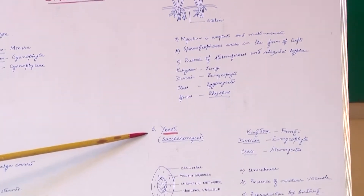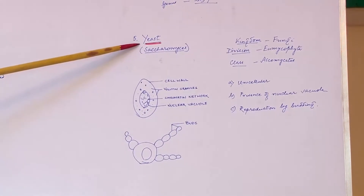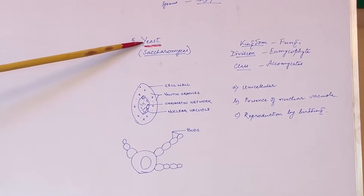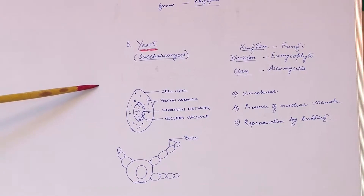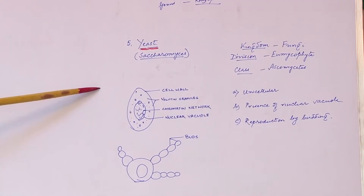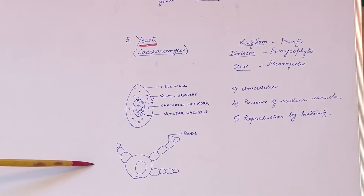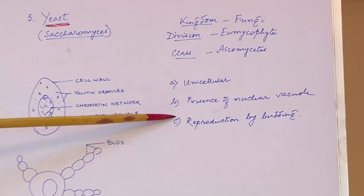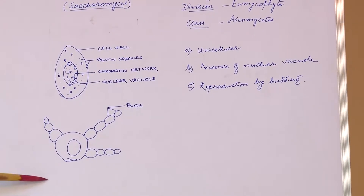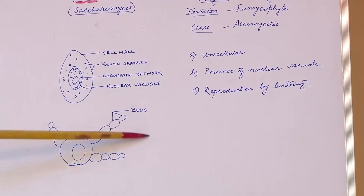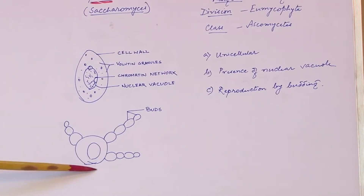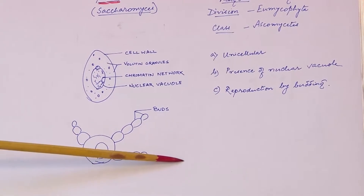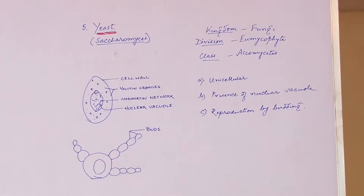The last one is a very useful microbe — we call it yeast. It is a baker's pride and a brewer's choice. It gives us two essential things: carbon dioxide as well as ethanol, by the fermentation process, because it respires anaerobically. Coming to its structure, it is unicellular; we find presence of a nuclear vacuole, and reproduction is exclusively by budding. When there is too much availability of carbohydrate, this stage of yeast is known as torula (T-O-R-U-L-A). When these buds drop off they give rise to another individual yeast. Thank you children.